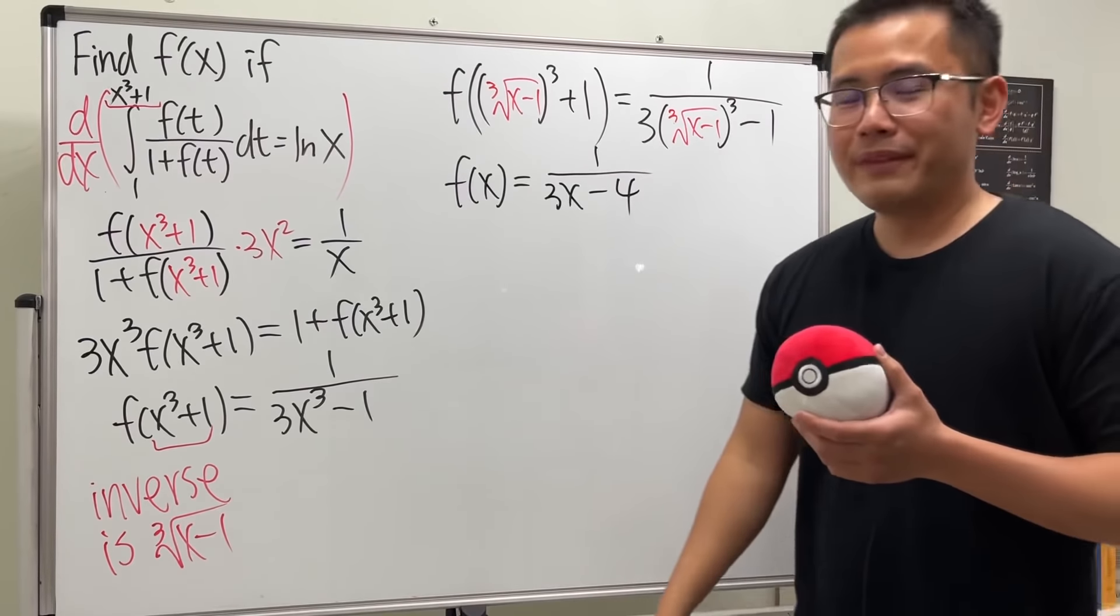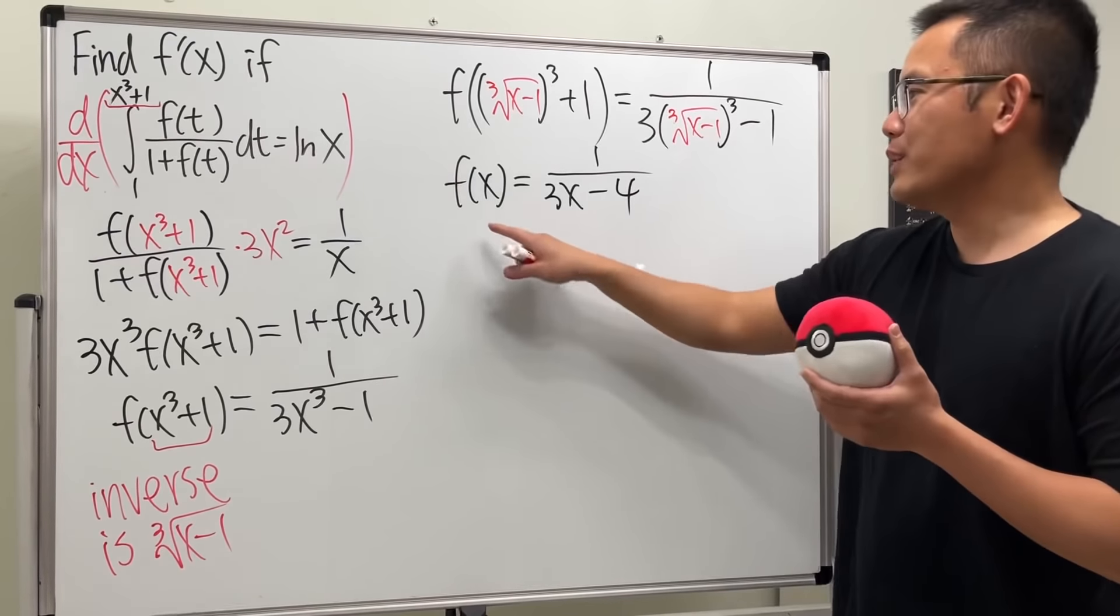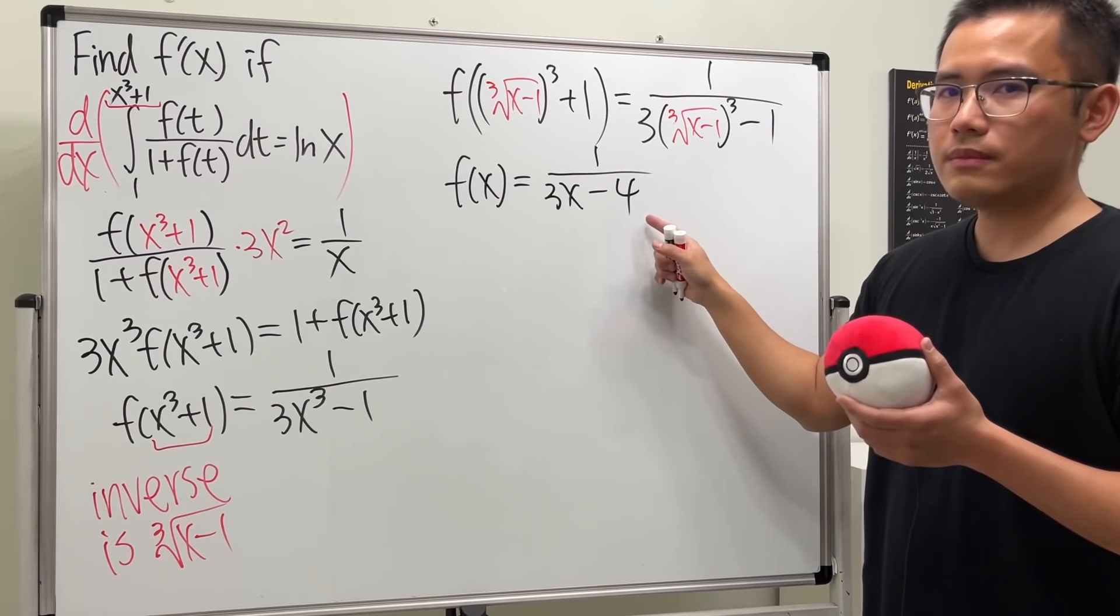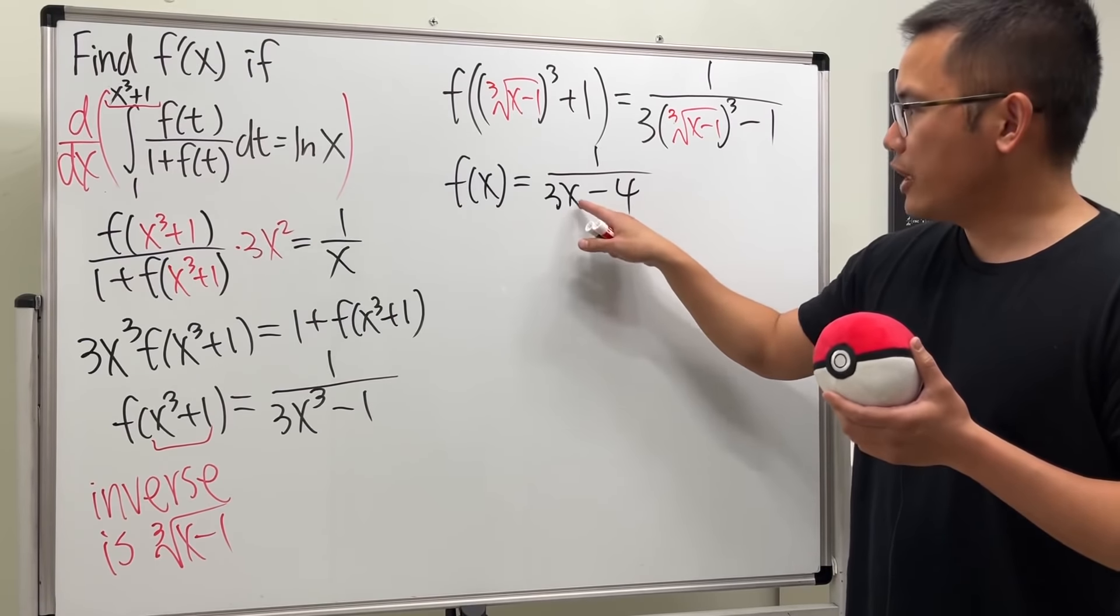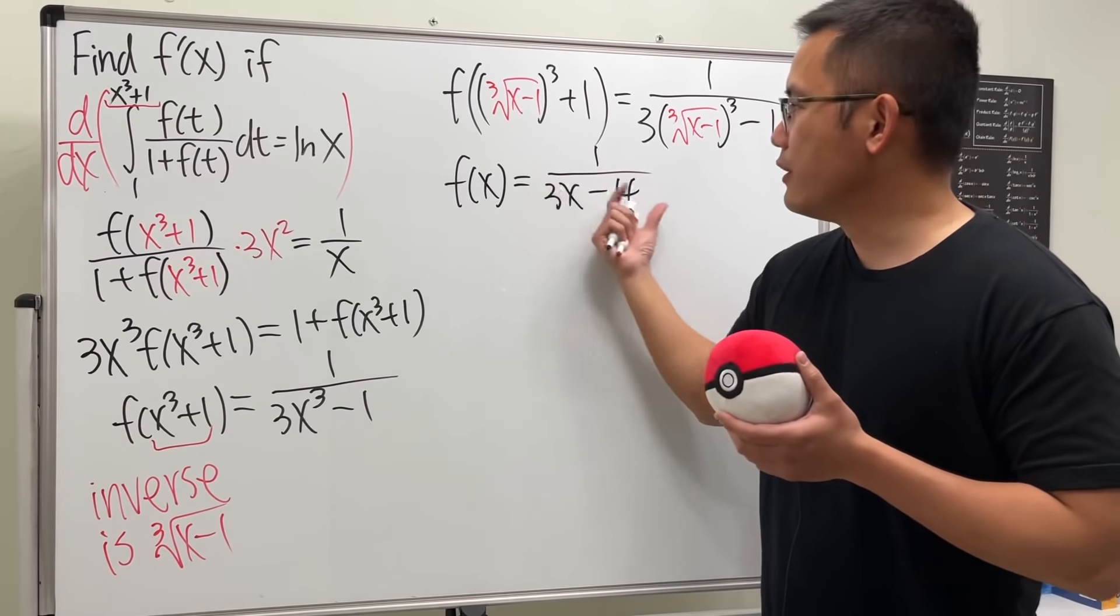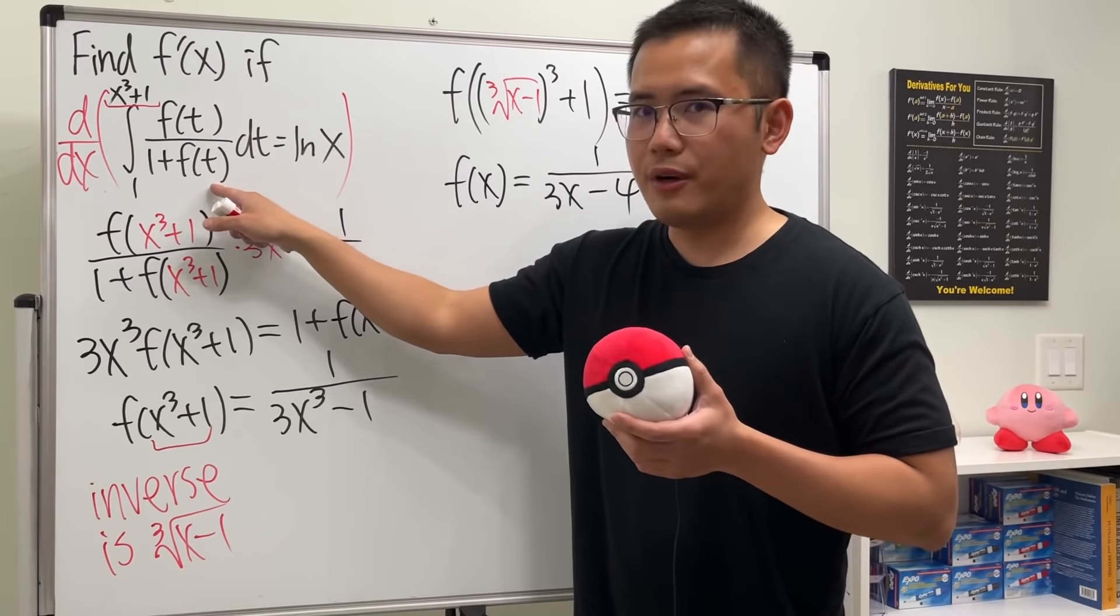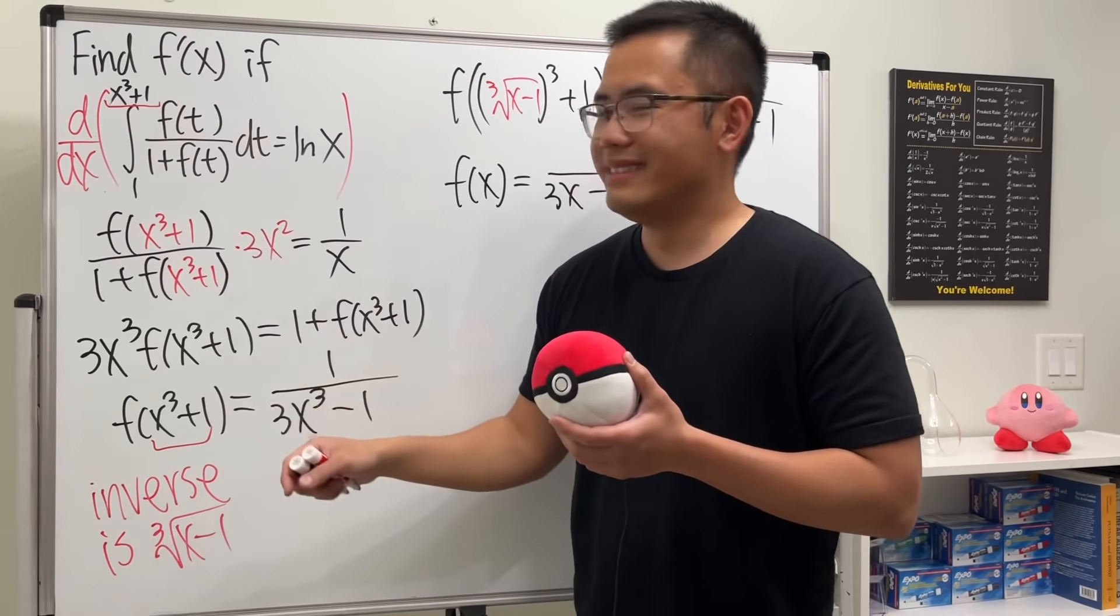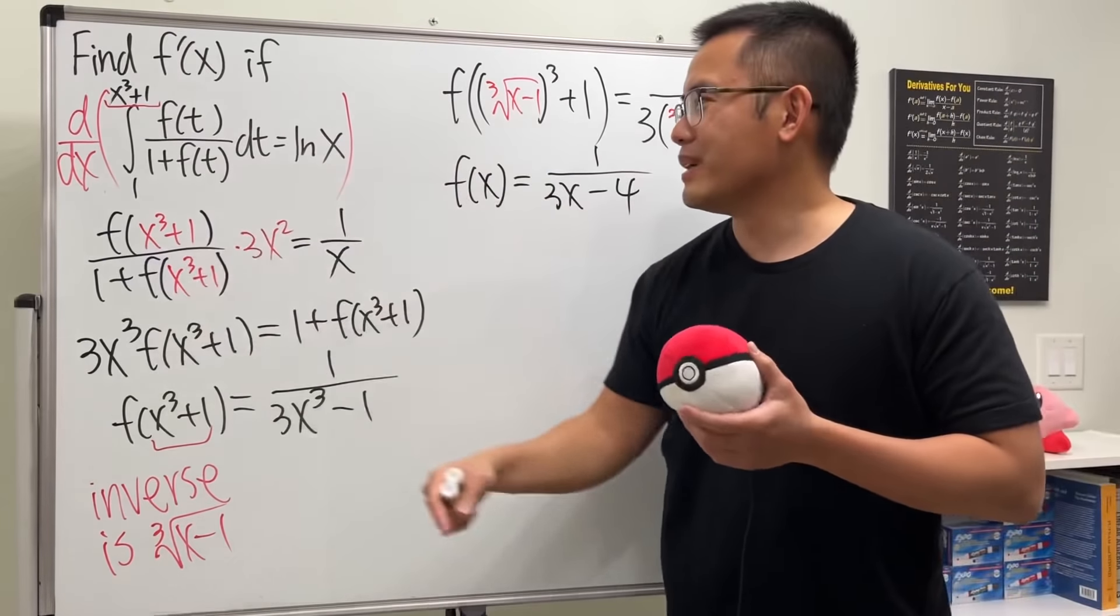Aha! This is pretty crazy. Because right now we are saying that the function is 1 over 3x - 4. Well, imagine you change the x to t and you put the function in here and also in here. Do your integral. And then plug in this.